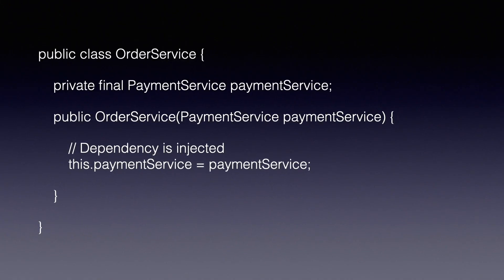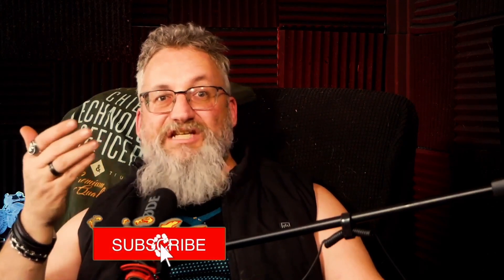With IOC, it's a completely different story. Now the IOC container — think of it like a super organized kitchen manager — handles creating and delivering the payment service. Your order service just uses it. The magic of IOC often happens through dependency injection. It's like dining at a restaurant: you don't cook the food yourself. A waiter brings you exactly what you ordered, and you just focus on enjoying the meal. Dependency injection works the same way. Instead of creating objects manually, your IOC container prepares everything behind the scenes and serves it to your code on a silver platter.